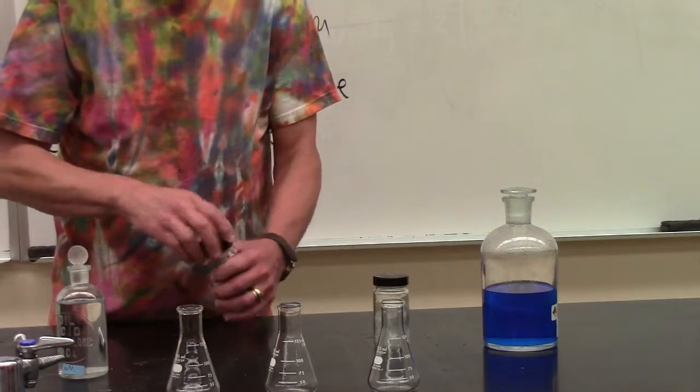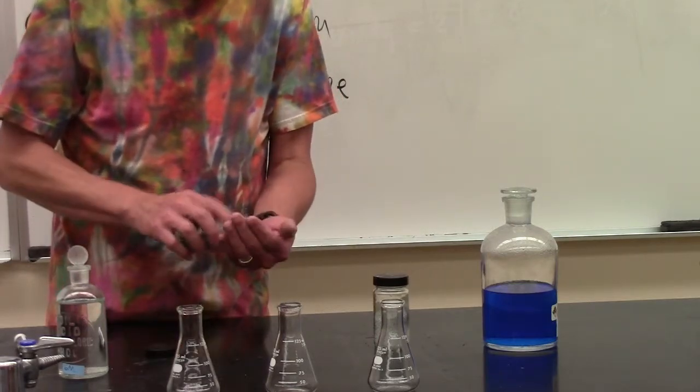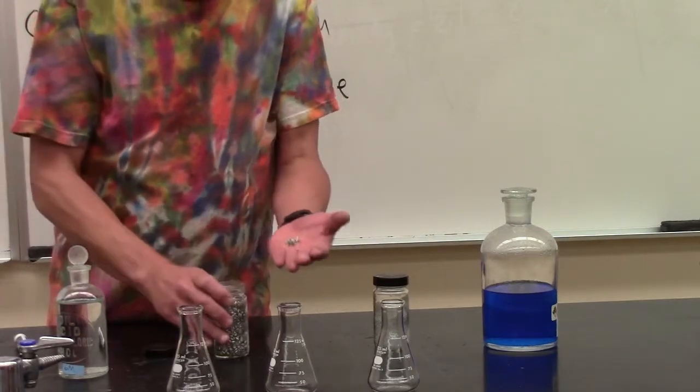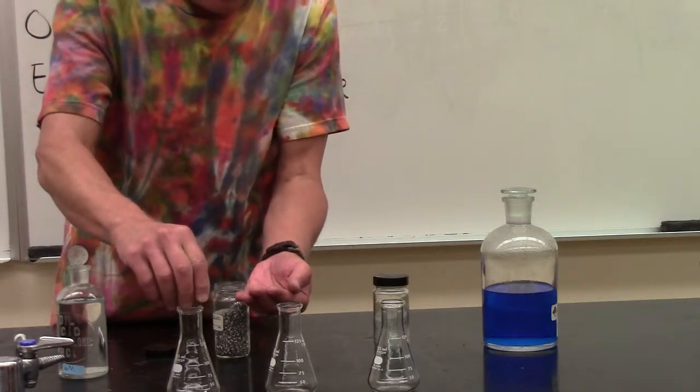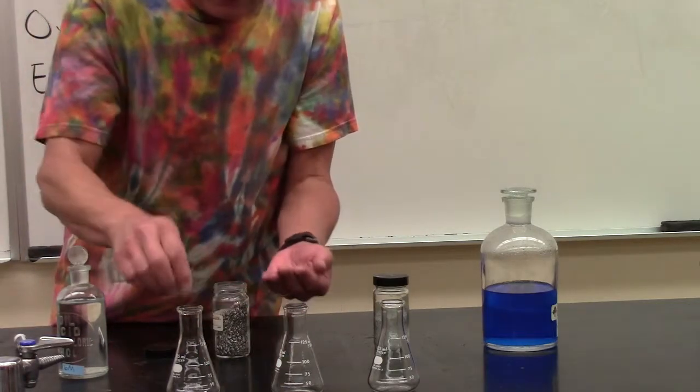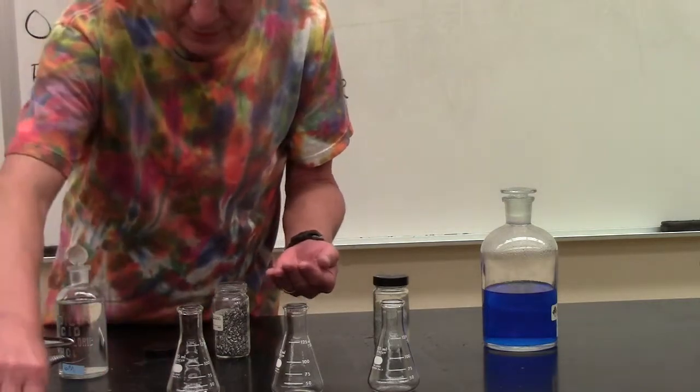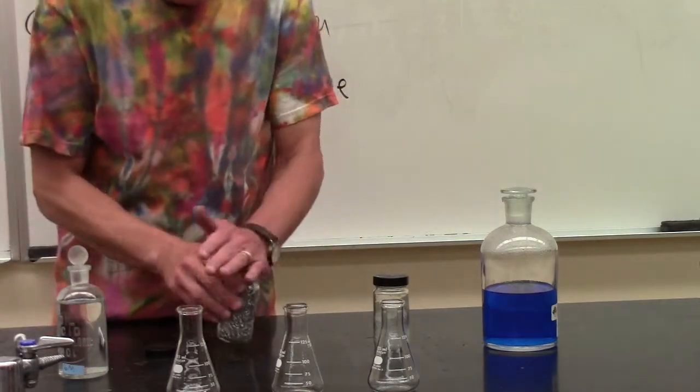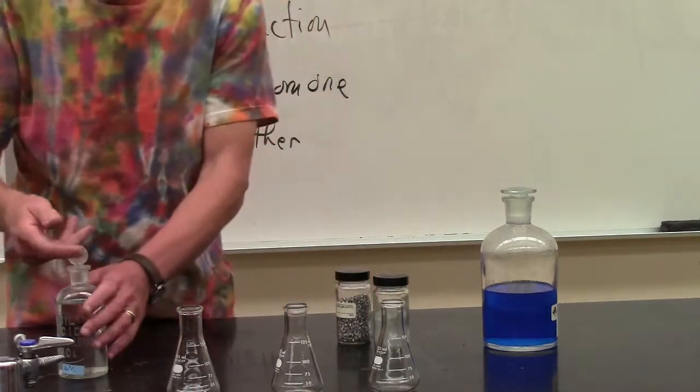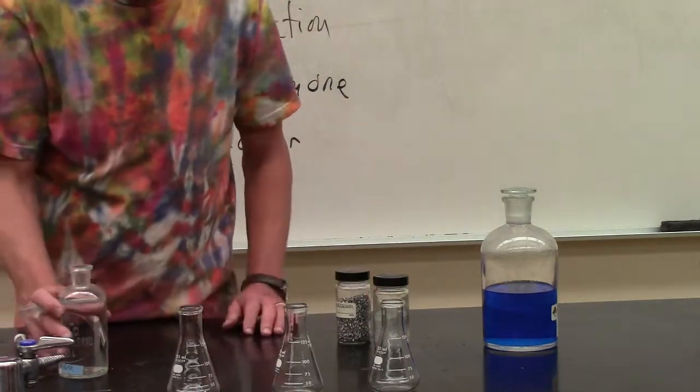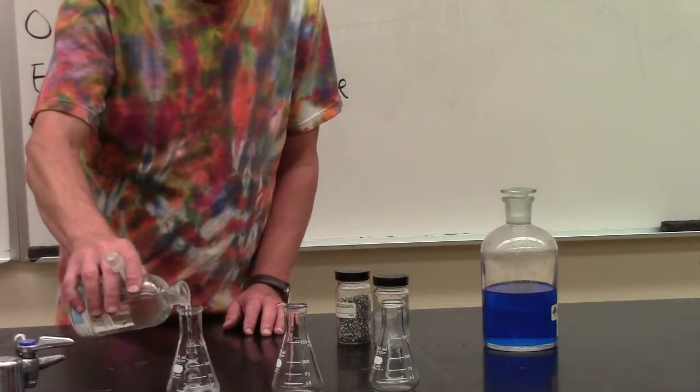I have some magnesium metal here, little chunks of magnesium metal. I'm not going to put a whole lot in there. And to it, I'm going to add hydrochloric acid. This is known as muriatic acid in a hardware store. This is 6 molar. And when I add this...